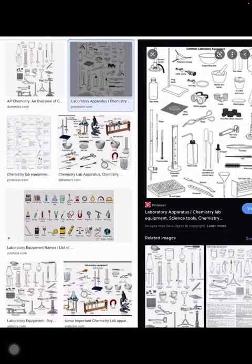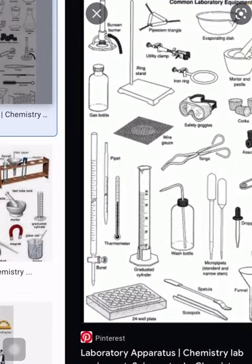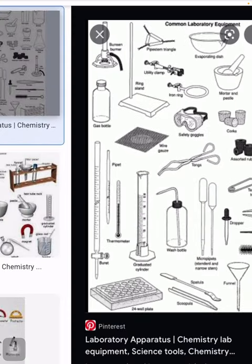There is an apparatus called safety goggles. You can see it has an elastic type of thing attached on both sides so that it is stretchable and we can wear it while doing different types of experiments, so that our eyes can be safe from the effect of different types of chemicals.